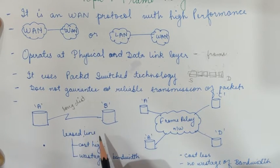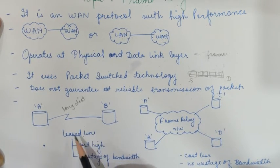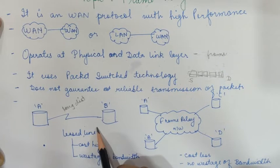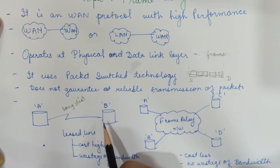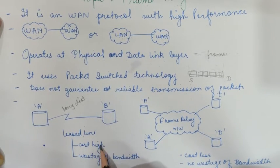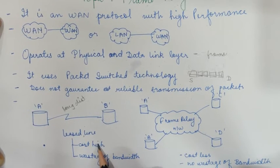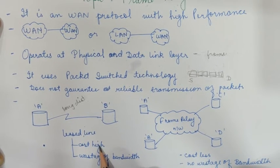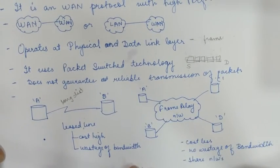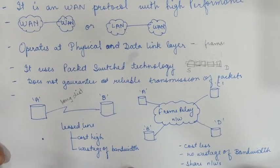But there is a problem with leased lines: no one uses 100% of the bandwidth, so bandwidth gets wasted. Also, the cost required for a leased line is very high. So wastage of bandwidth and high cost are the two main problems with leased lines.